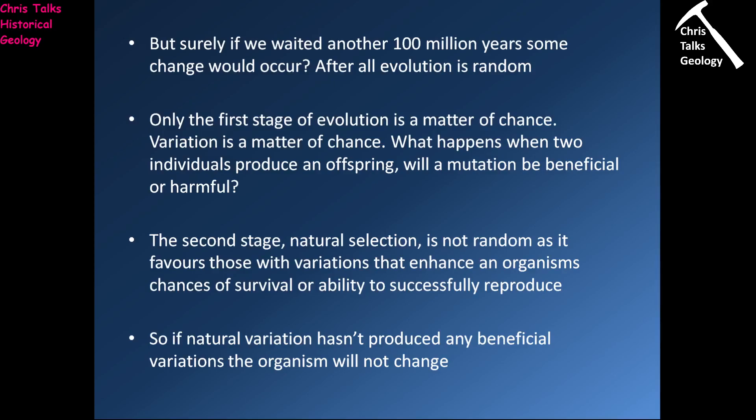If natural variation hasn't produced any beneficial variations, an organism just won't change. This goes back to the idea of punctuated equilibrium — the idea that evolution occurs quite quickly in short bursts when there's some very large sudden change to an environment. We tend to see species being very stable for prolonged periods of time, and then all of a sudden something happens and we see evolution really kick in in a big way.